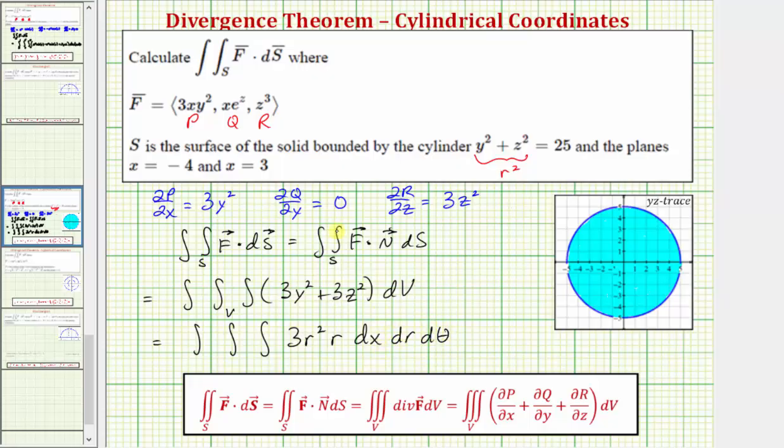The limits of integration for x are going to be from -4 to 3. We can use the yz trace if we need to, to help us find the limits of integration for r and θ. The limits of integration for r from 0 to 5, and for θ, it's from 0 to 2π.